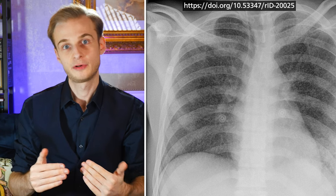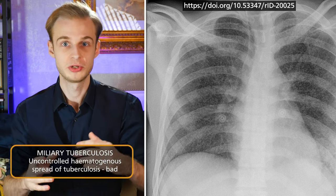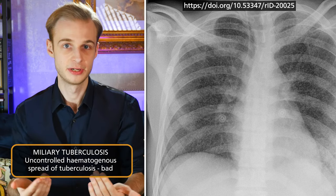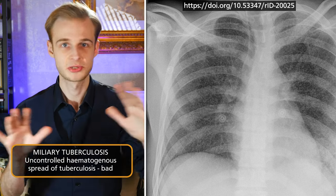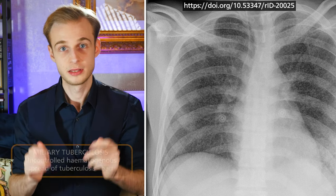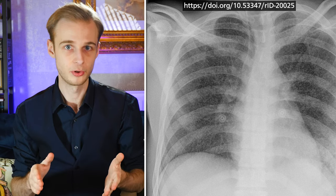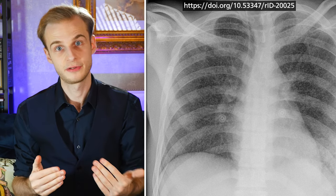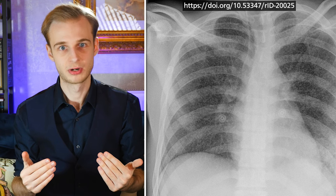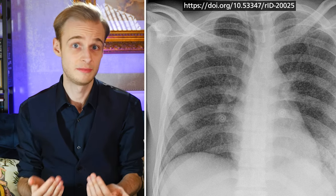The second pattern to look out for is miliary tuberculosis, which refers to widespread hematogenous dissemination of the tuberculosis bug. You can see small, uniform deposits all throughout the lungs. The prognosis if a patient reaches this stage is generally quite poor, and although this is becoming increasingly rare, it's still one that will prompt an 'oh dear' when you come across it in practice.